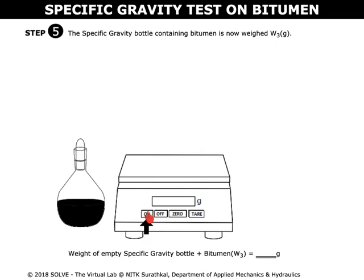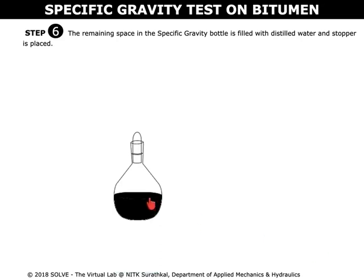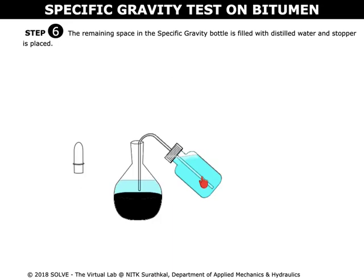Switch on the weighing machine and click on tare to clear the weight. Place the specific gravity bottle with the bituminous material in the weighing machine and note down the weight. Open the bottle and fill the remaining space with distilled water in the specific gravity bottle.